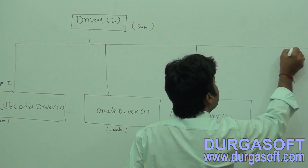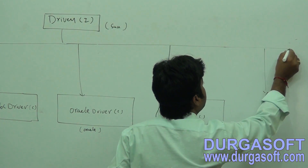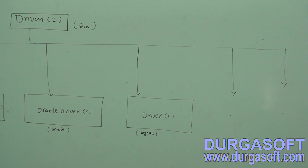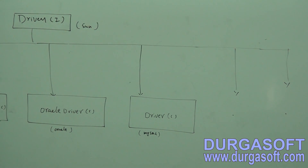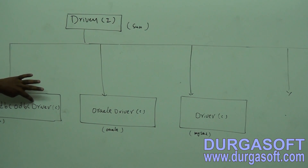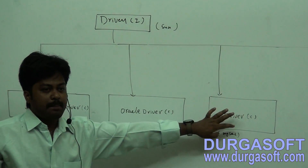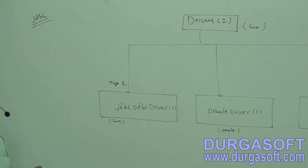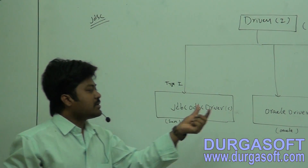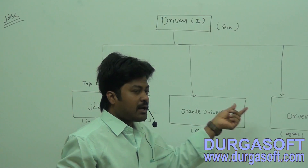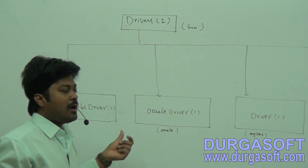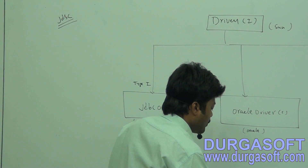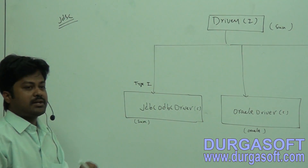So there is only one implementation from Sun, and there are many implementations from many database vendors. The interface is given by Sun, and one implementation is also given by Sun. The remaining implementations are from third parties and different vendors. Whenever you require a connection from Oracle or MySQL, the question is how to get that connection from these classes — using which type of coding.